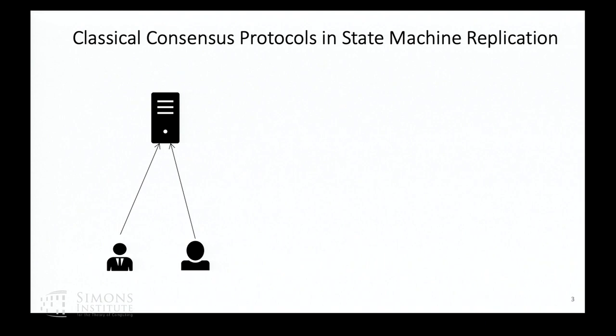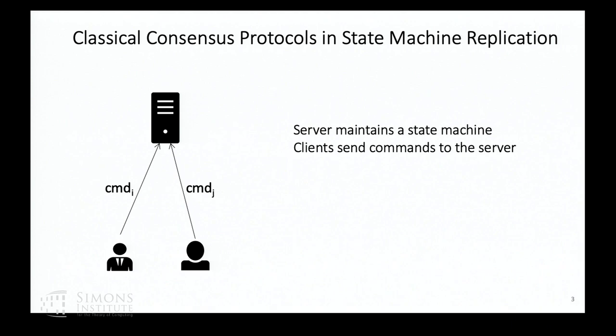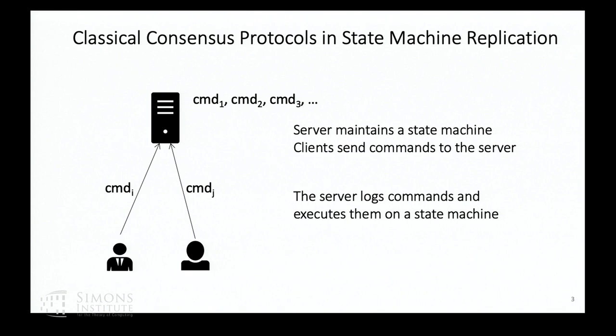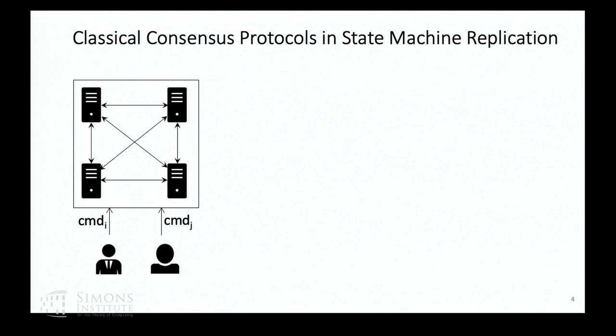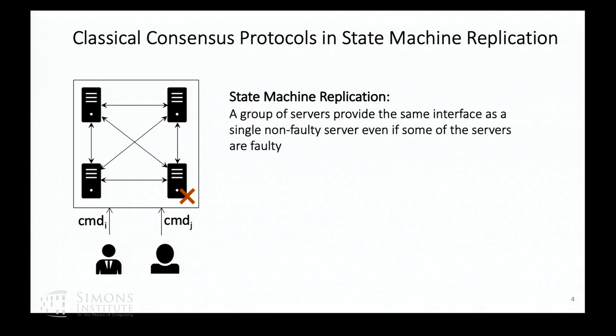You have a server who is maintaining a state machine, and you have multiple clients who are sending commands to this server. The goal of the server is to take these commands, order them, log them, and then execute them one by one on the state machine. If you have a server that never fails, this is an ideal world to live in. But unfortunately, we have to deal with faulty servers, which is why state machine replication suggests using multiple server replicas instead of a single non-faulty server. The guarantee is that a group of servers will provide the same interface as a single non-faulty server, even if some of them are faulty.